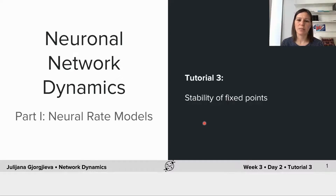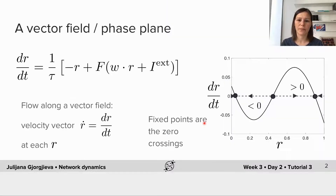Welcome back to the last part of the first tutorial. Today in this part we're going to be discussing how to find the stability of fixed points that we defined in the previous part of the tutorial. The phase plane allows us to visualize the dynamics of change of the population activity R as a function of time and as a function of the activity of this neural population itself R.